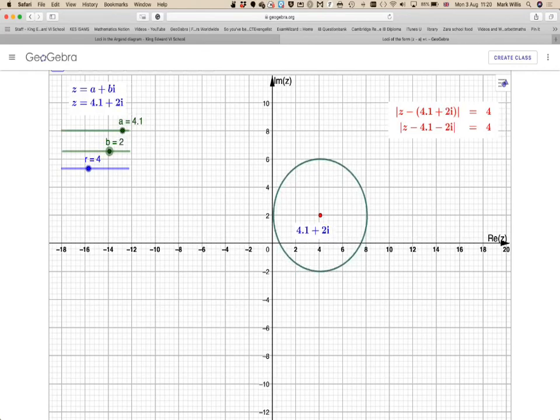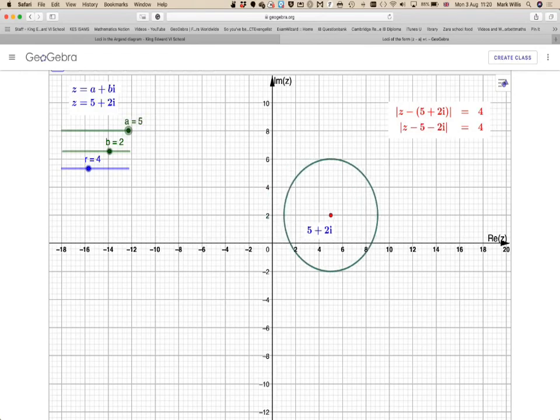And it will give me the... Let's take some nice values. Let's just take 5. And then you can see here it gives you the complex thing and this is the loci that represents that.